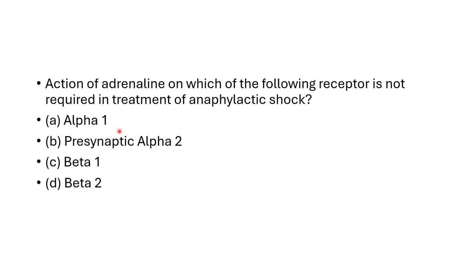Due to adrenalin, alpha-1 receptor causes vasoconstriction. Beta-1 receptor causes positive ionotropic and chronotropic effects. Beta-2 receptor causes bronchodilation. So the A, B, and C effects are necessary.